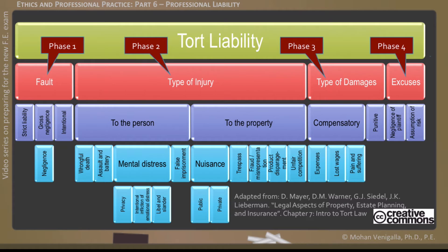If an injury has occurred, did it happen to a person or to property? If it happened to a person, what kind of injury is it — physical or emotional? If it is to property, what type of injury is it? If there has been an injury resulting from the fault — what in legal terms is called a tort — in the third phase the type of damages are assessed. Damages can be compensatory or punitive. In the fourth phase, the court will determine if the defendant has valid excuses.